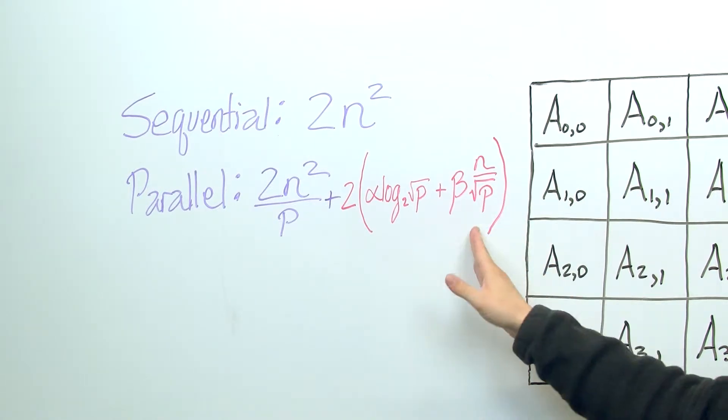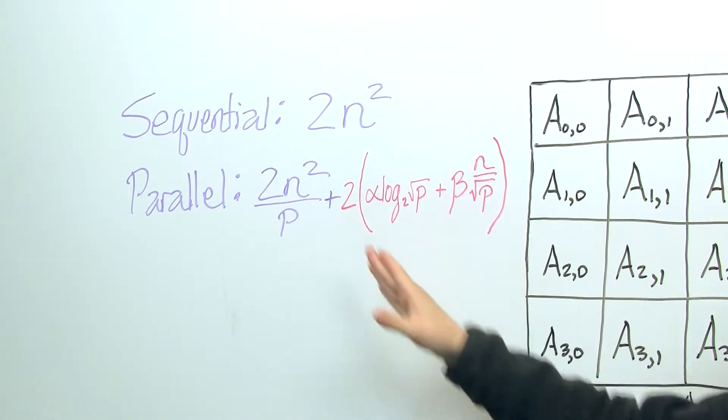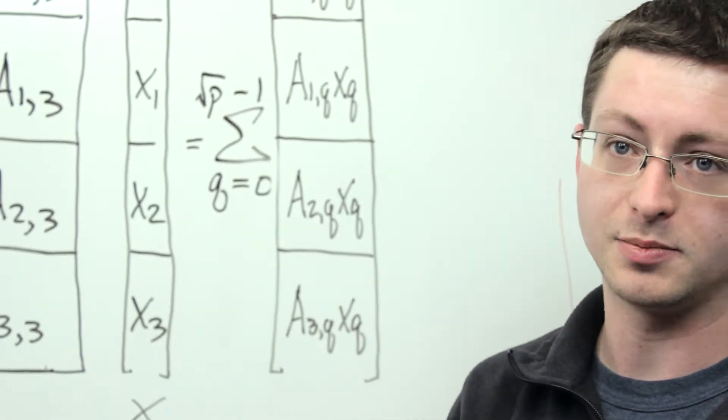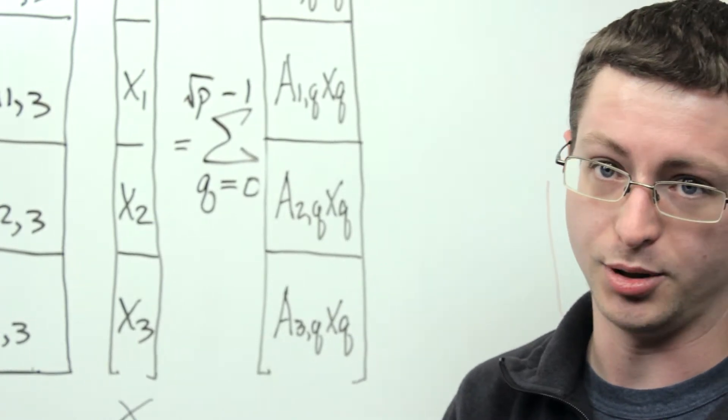Okay, so you may be asking, well, why is there a 2 here? And the reason has to do with the fact that, in general, it's nice to have the input of this parallel algorithm be the same as the output.